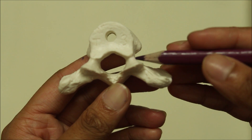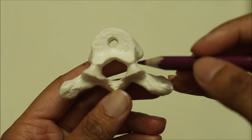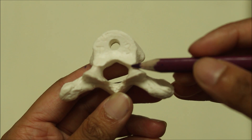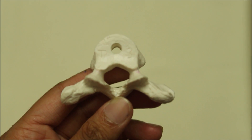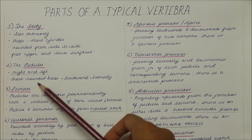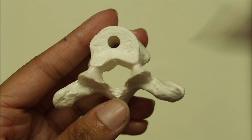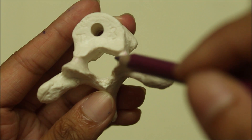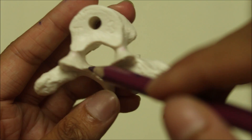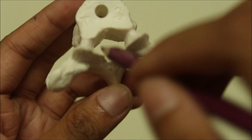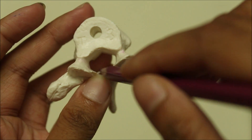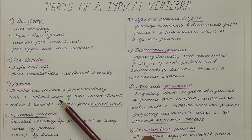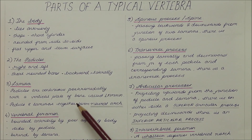Next we have the right and left pedicles — short rounded bars that project backwards and somewhat laterally from the posterior part of the body. The pedicles are continuous posteromedially with a vertical plate of bone called the lamina. The pedicle and lamina together form the neural arch.